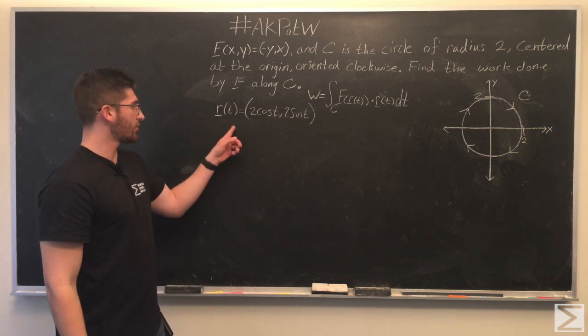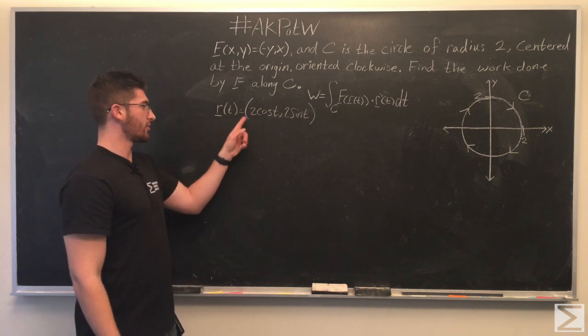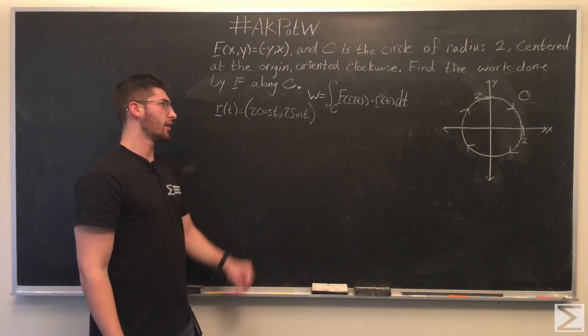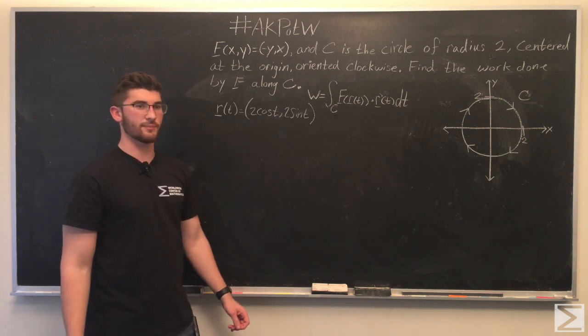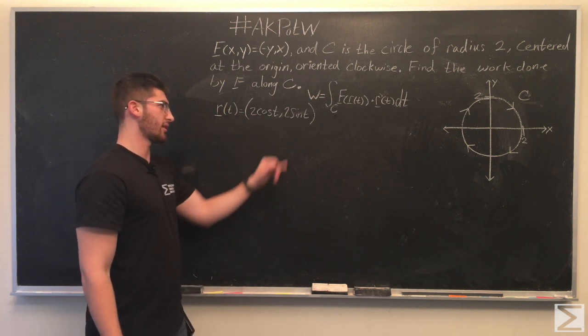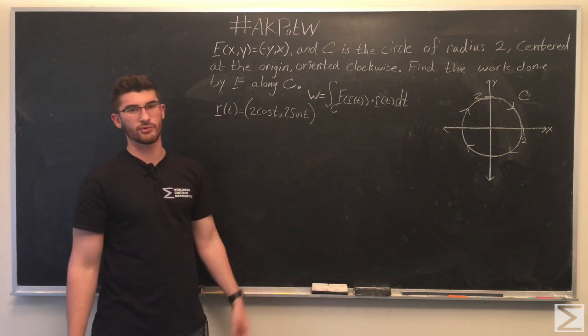So, the parameterization of our curve is going to be 2cos(t) as the x component, and the y component is going to be 2sin(t). So, r·cos(t) equals x, r·sin(t) equals y.